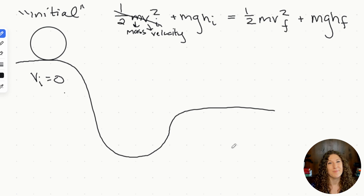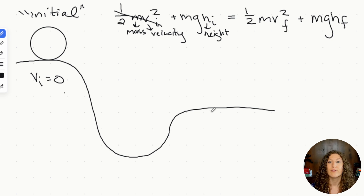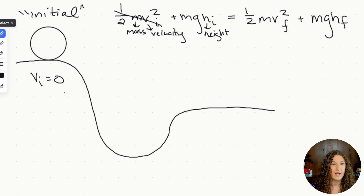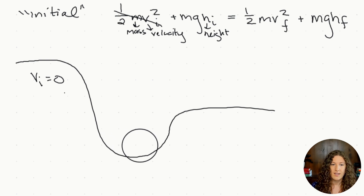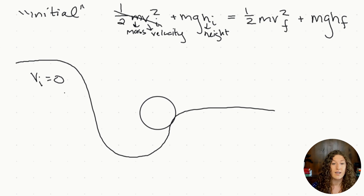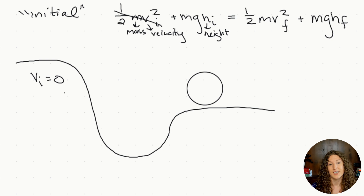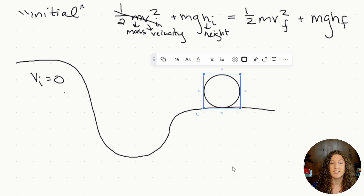That means we can eliminate the initial KE term. We're left with mass times gravity times the initial height compared to the final height. As the ball rolls down the hill, it gains velocity and kinetic energy while losing potential energy. Going back up the hill, it slows down, loses velocity, and regains height and potential energy, until it reaches its final state.